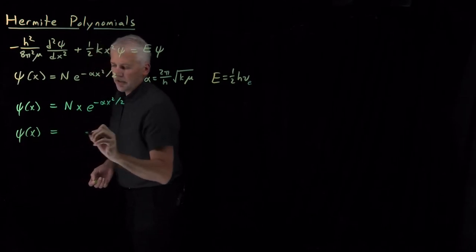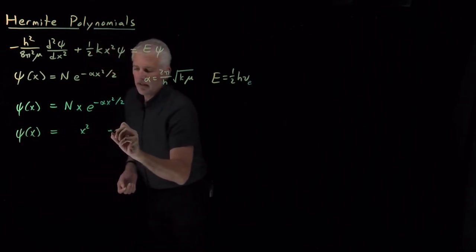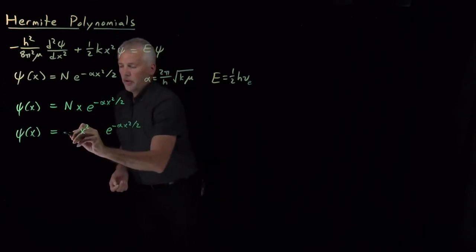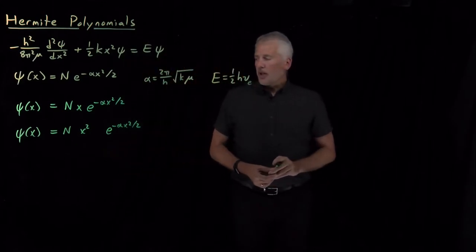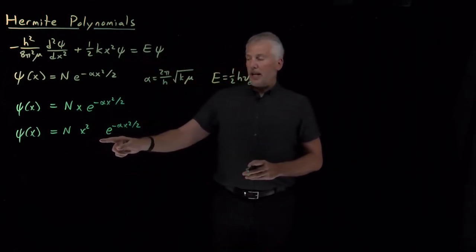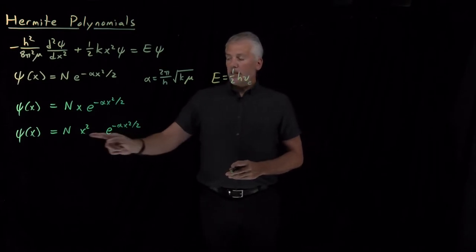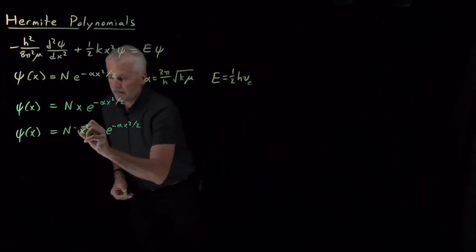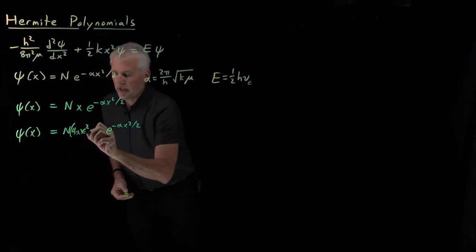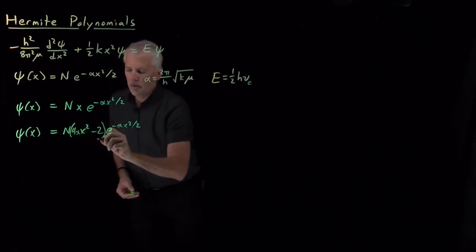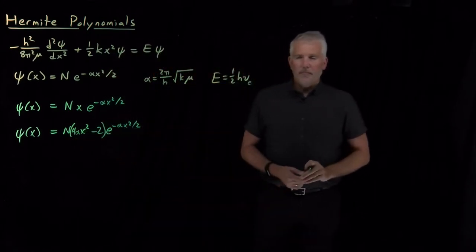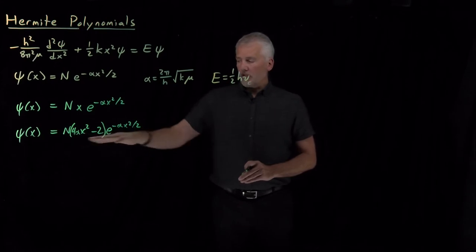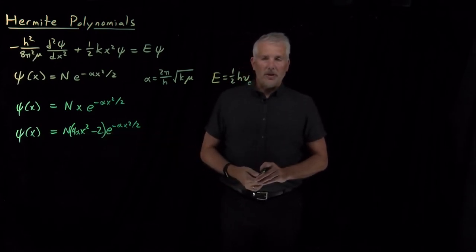Likewise, there are functions that look like x squared times e to the minus alpha x squared over 2, with normalization constants out front. This one is a little more complicated because there's cancellation needed between the various product rule terms when taking the derivative. Because of that extra cancellation, using 4 alpha times x squared plus a constant term multiplying the Gaussian also solves the harmonic oscillator Schrödinger equation.